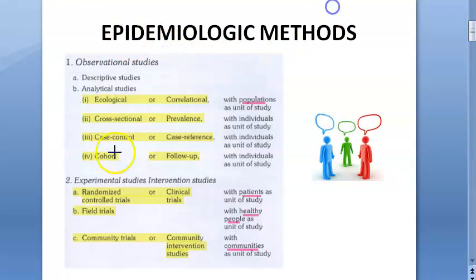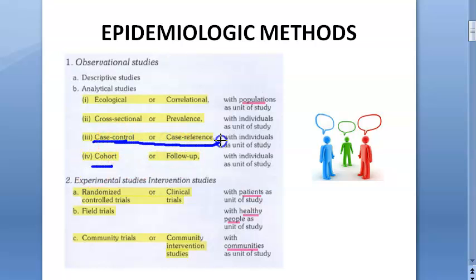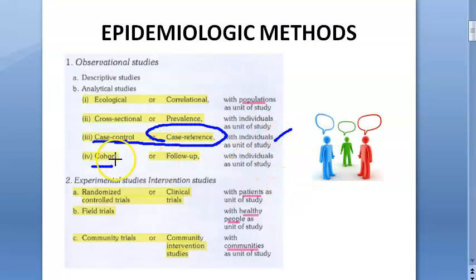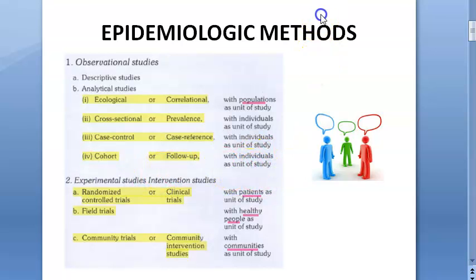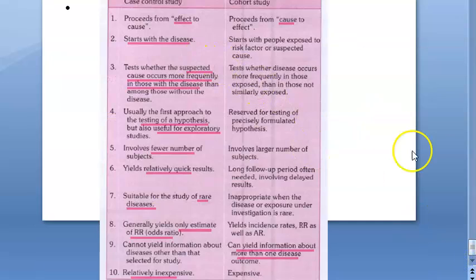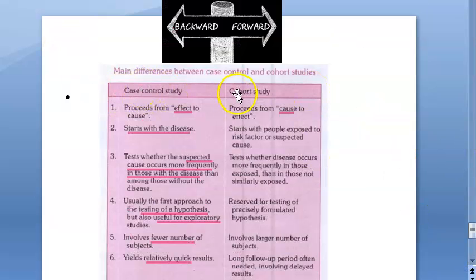What is the difference between a case control study and a cohort study? A case control study is also called a case reference study — individuals are the unit of study. In a cohort study, also called a follow-up study, individuals are again the unit of study.